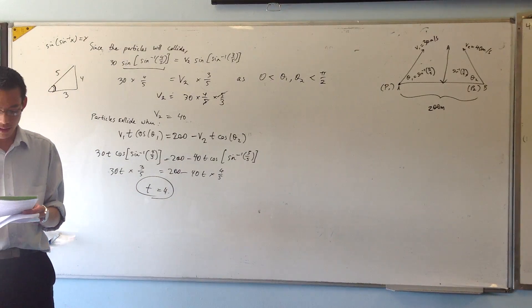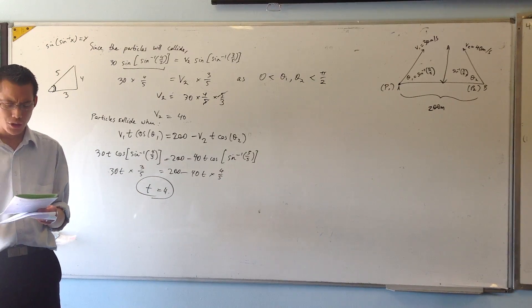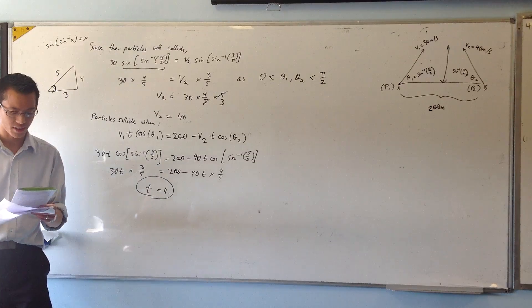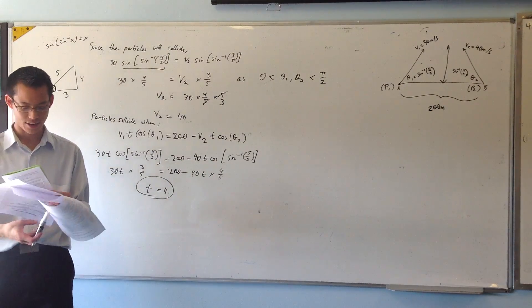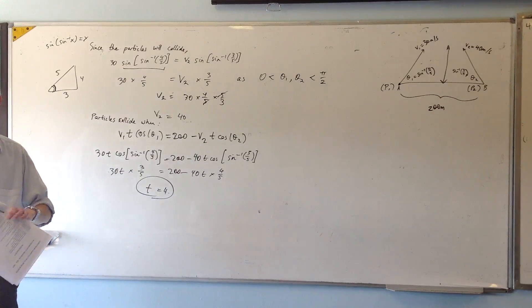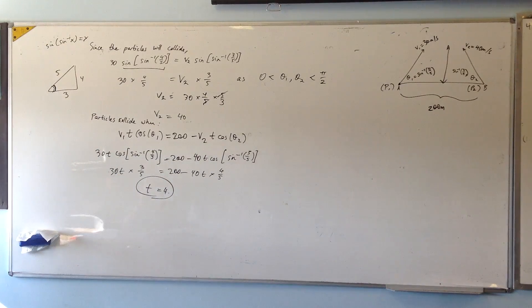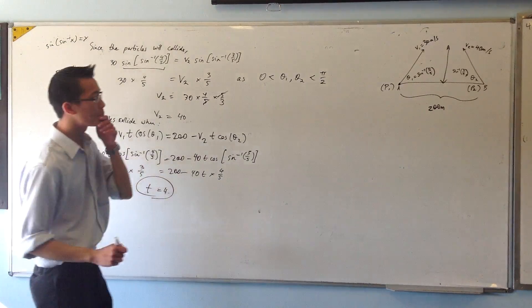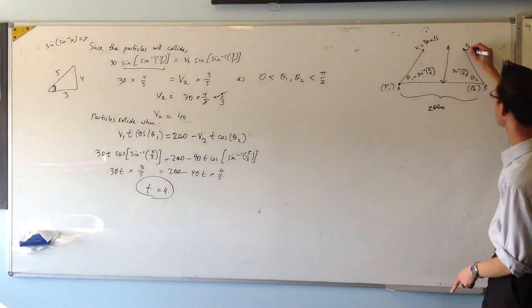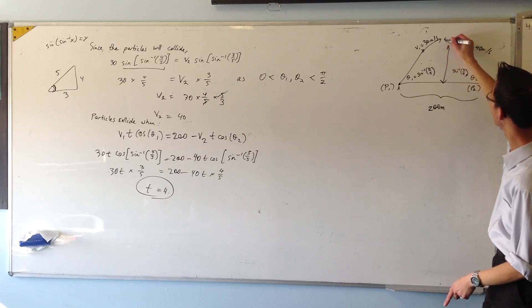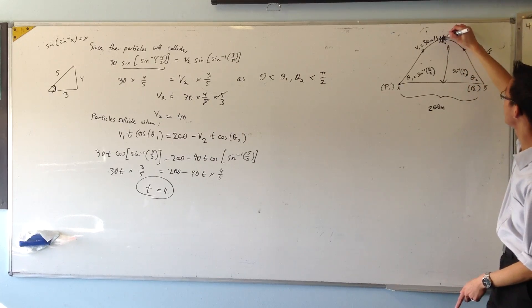Find, correct to the nearest degree, the obtuse angle between the directions of motion of the particles at the instant they collide. Now this is where the fun really settles in. What's the picture? These two particles are going to collide in some way. Say they might collide like that. There's my collision.